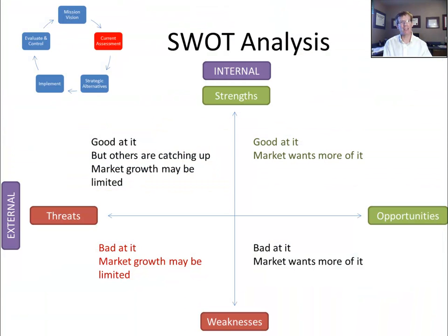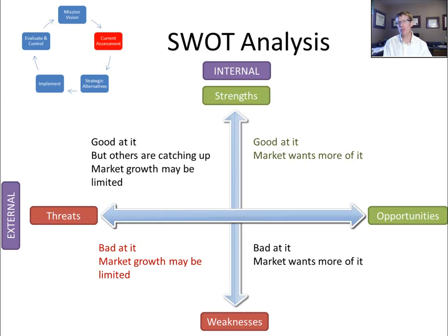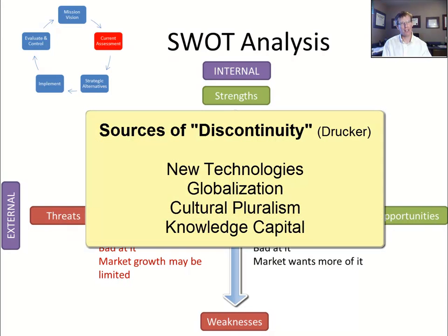As you'll learn in later lessons, strategists love incorporating the findings from strategic analysis into matrices. In 1968, Peter Drucker first surmised that we cannot assume that the trends that exist today will continue, pointing at four sources of discontinuity: new technologies, globalization, cultural pluralism, and knowledge capital.